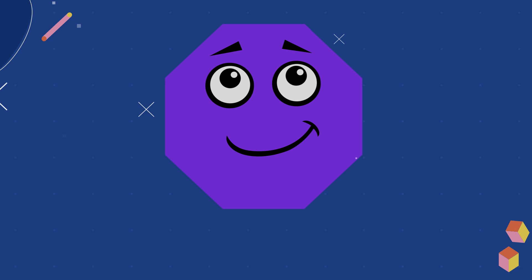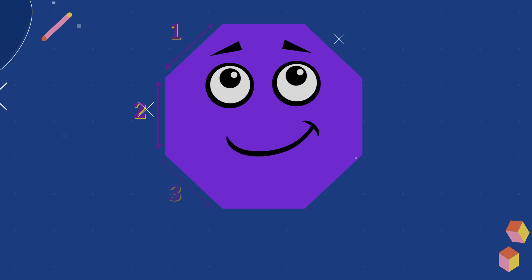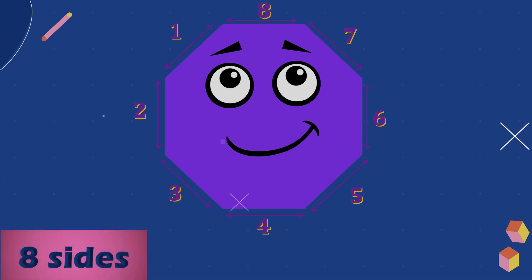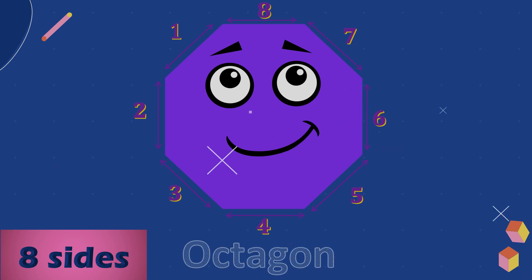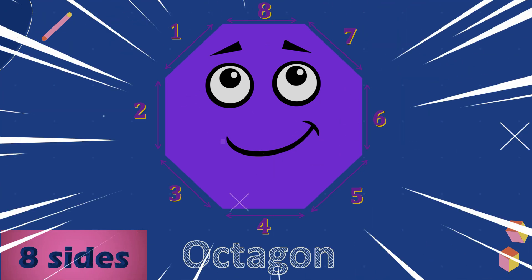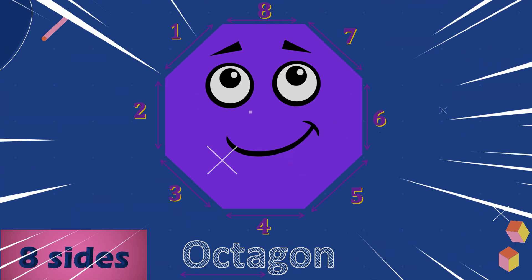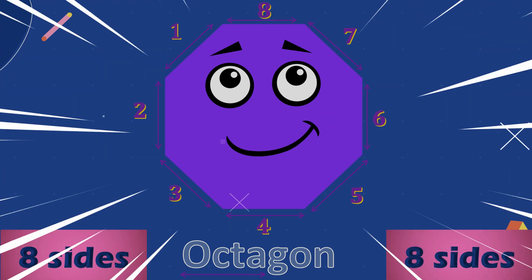Let's count the number of sides. One, two, three, four, five, six, seven, eight. Eight sides. Eight sides is Octagon. Octa means eight. Octagon.